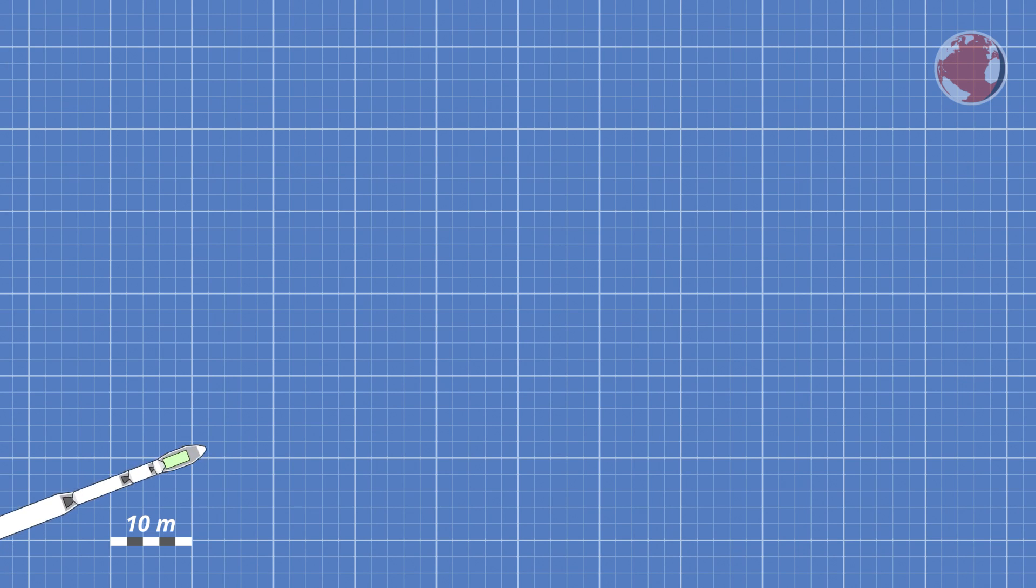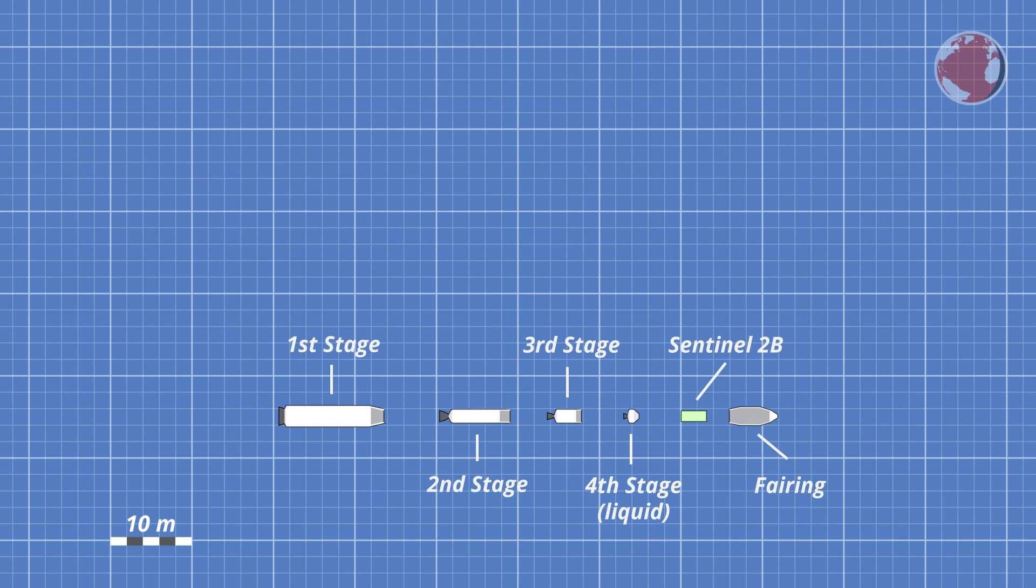Vega has three solid fuel stages and an upper stage burning hypergolic propellant. This means the fuel ignites by itself as soon as the two components mix. On top of that is the payload Sentinel-2B.